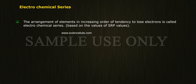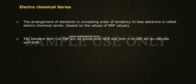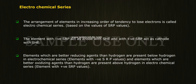The electrochemical series is the arrangement of elements in increasing order of their tendency to lose electrons. Based on Standard Reduction Potential (SRP) values, elements with negative SRP act as the anode with respect to the Standard Hydrogen Electrode, while elements with positive SRP act as the cathode with respect to the Standard Hydrogen Electrode.